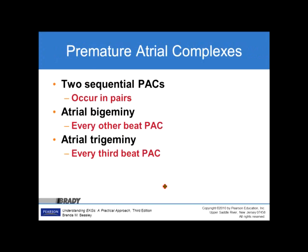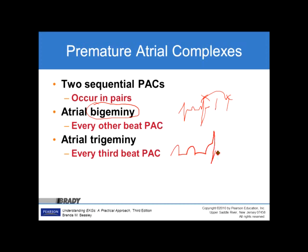Two sequential PACs occur in pairs. Atrial bigeminy is when a PAC occurs every other beat. If you have a normal beat followed by a PAC occurring every other beat, that is bigeminy. If it happens every third beat — normal beat, normal beat, then a PAC continuously every third beat — that is atrial trigeminy. Every two beats: bigeminy. Every third beat: trigeminy.